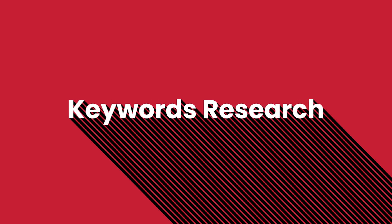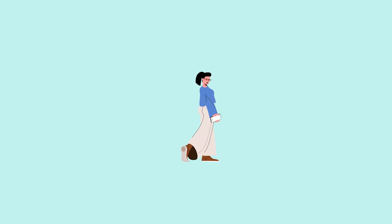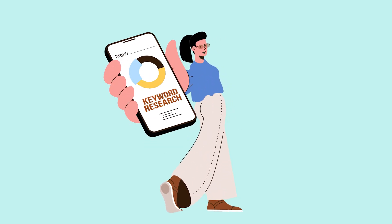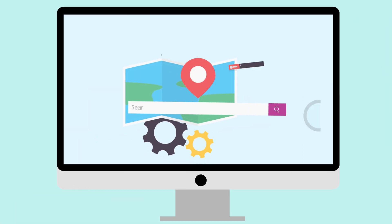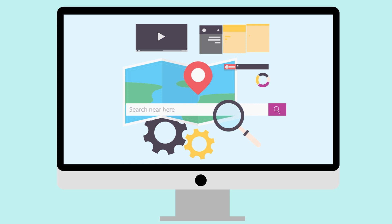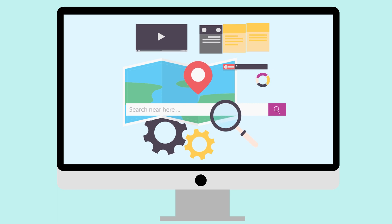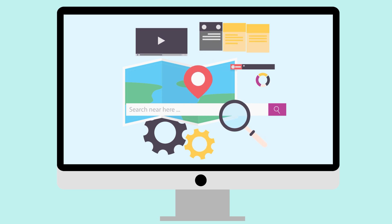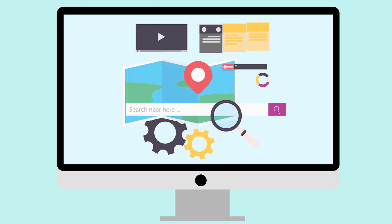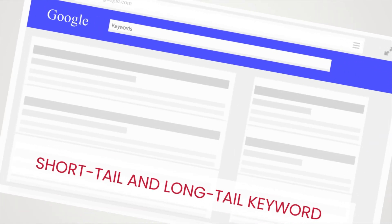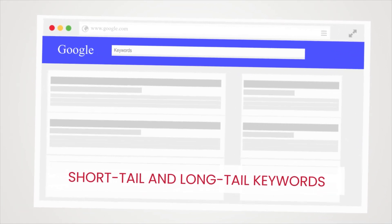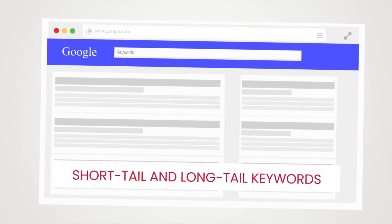Number one: do your keyword research. Keyword research is where SEO begins. First, you identify your niche and then start building a repository of relevant keywords. Make sure to add both short tail and long tail keywords.